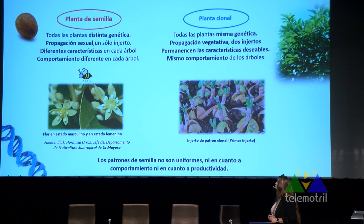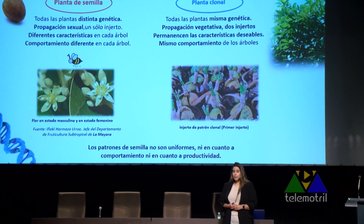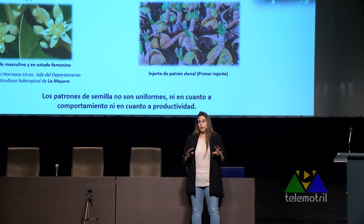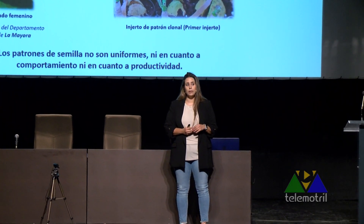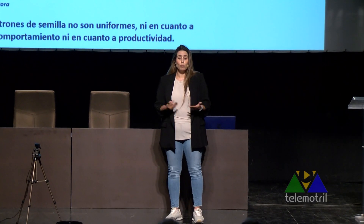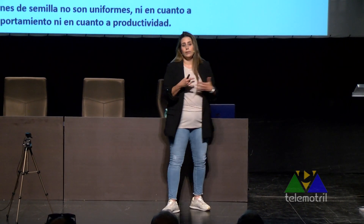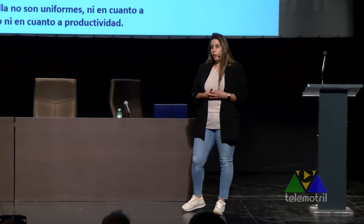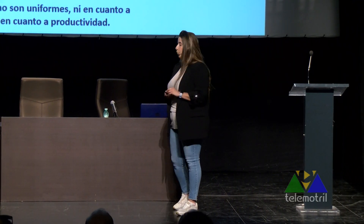En cambio, en la producción de aguacate clonal es una propagación vegetativa: el patrón es una púa que hacemos enraizar. Por lo tanto, todos los árboles tienen la misma genética, se van a comportar de forma muy similar, prácticamente idéntica, y no existe un intercambio de genes. Es una propagación vegetativa, una clonación.